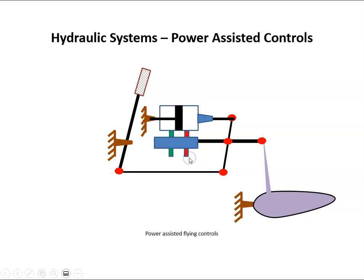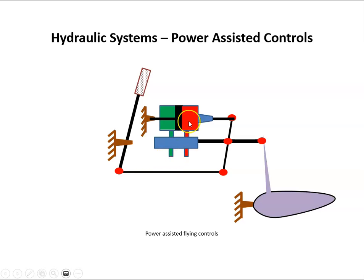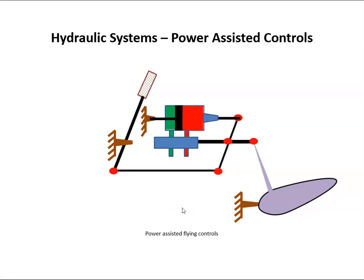That will allow hydraulic power to fill the piston. We've got the high pressure line coming in here and the low pressure line in here. The pressure here is acting on a fixed piston with a moving cylinder. So the oil pressure is going to move the cylinder to the right, and that just helps move the flight control into this position.